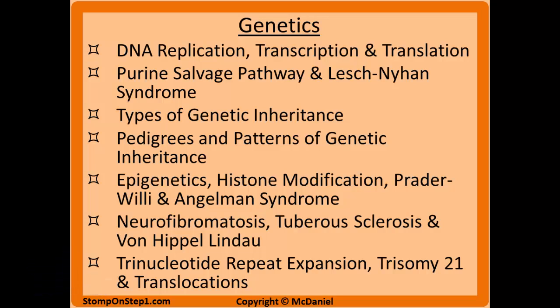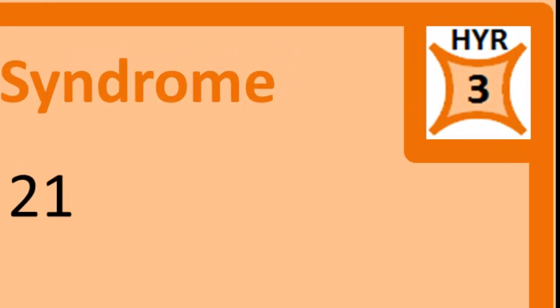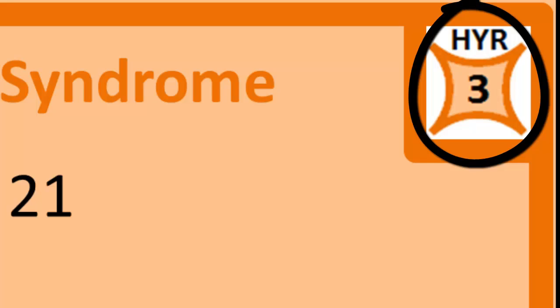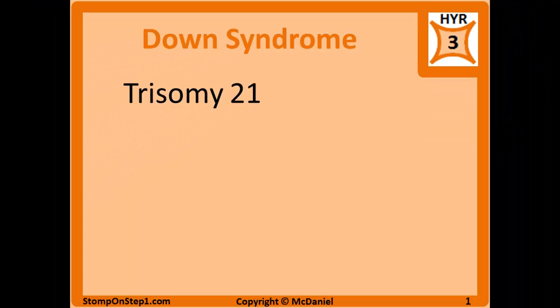Hopefully you've already watched this whole section and are ready to move on to other sections. You can see here in the top right corner that I give Down syndrome a high yield rating of 3. A high yield rating is a scale from 0 to 10 that gives you a rough estimate for how important each topic is for the Step 1 exam. If you'd like to learn more about how I calculate the high yield rating, you can head to my website.